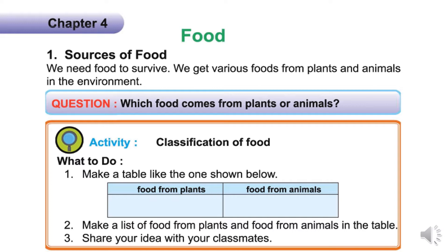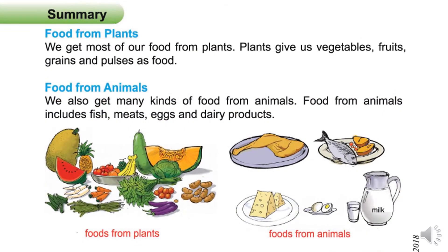We need food to survive. We get various foods from plants and animals in the environment. We get most of our food from plants. Plants give us vegetables, fruits, grains and pulses as food.